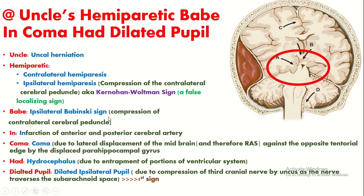In addition, the patient can present with either ipsilateral or contralateral Babinski sign because of compression of the cerebral peduncles. Similarly, the patient will present with infarction of the anterior and posterior cerebral arteries, as these arteries also travel through this area. The lateral displacement of the midbrain, which contains the reticular activating system, against the opposite tentorial edge by the displaced uncus or parahippocampal gyrus leads to damage of the reticular activating system, causing coma.